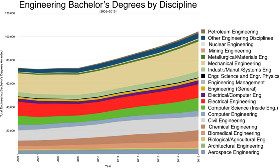In the fifth year of HTL, as in other secondary schools in Austria, there is a final exam called the Matura. Graduates obtain an engineering degree after three years of work in their studied field.